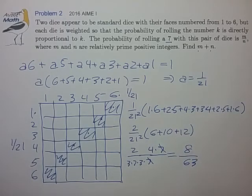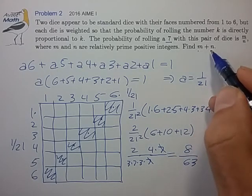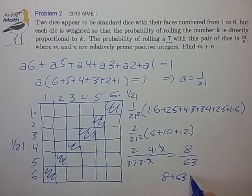This looks like a reduced fraction. We're looking for the sum m plus n. So that's 8 plus 63, 71. That's our final answer.